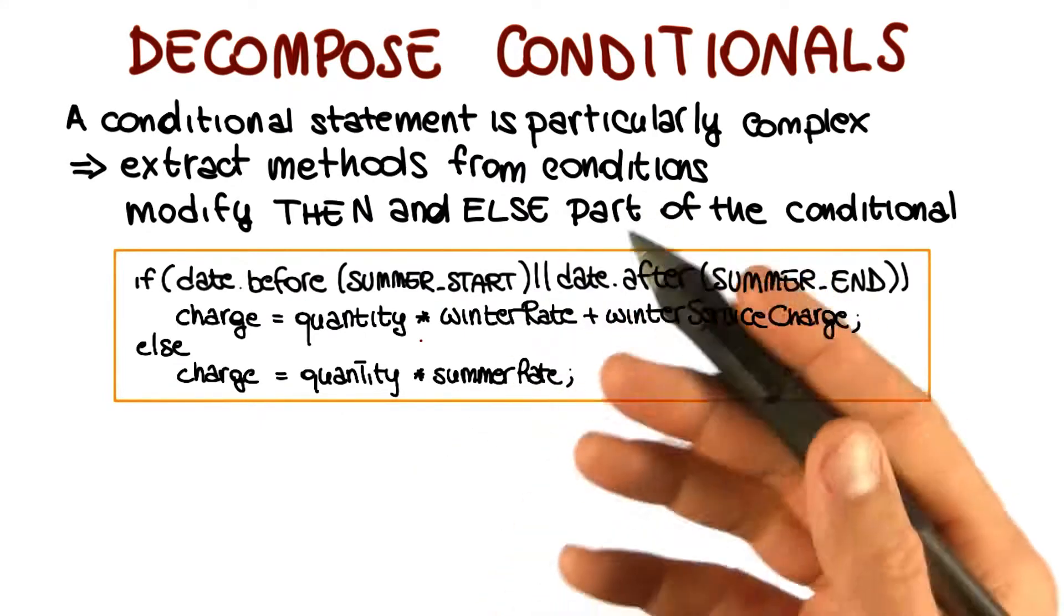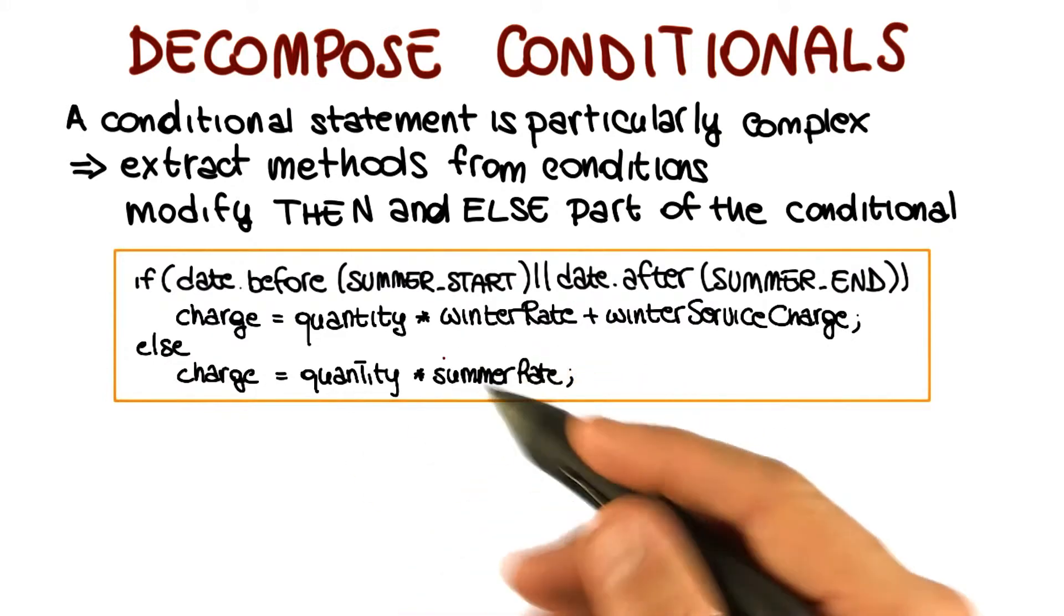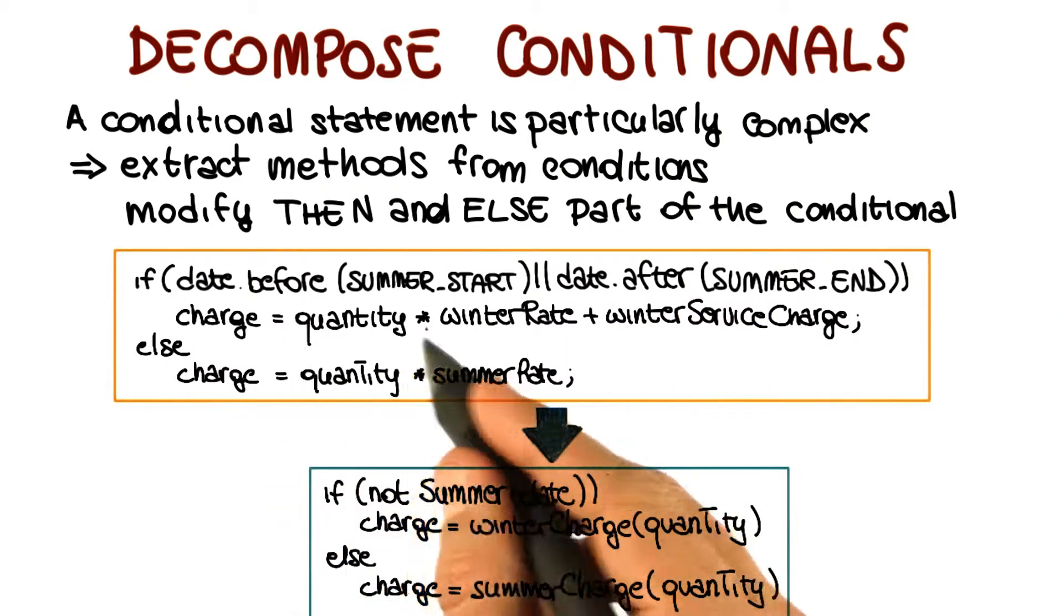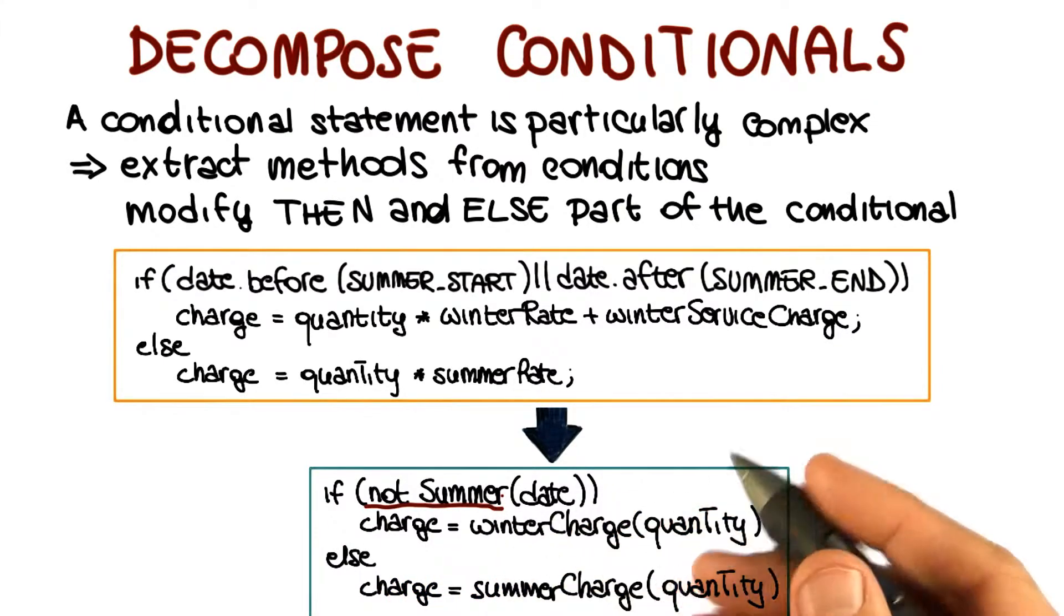So how can we do it? By applying this refactoring as we described. Let's see what happens when I apply the decomposed conditionals refactoring to this method. The first thing I will do is to take this condition, create a method that performs exactly the same check, give it a meaningful name, in this case I called it not summer, which is pretty self-explanatory, and then replacing the conditional with a call to that method.